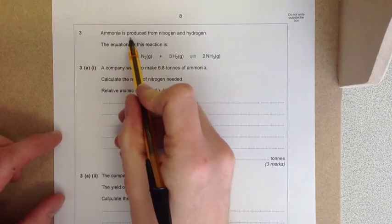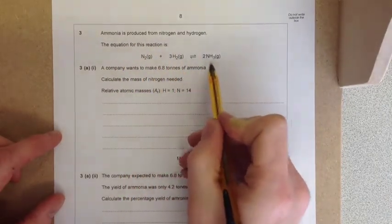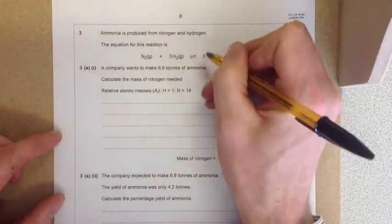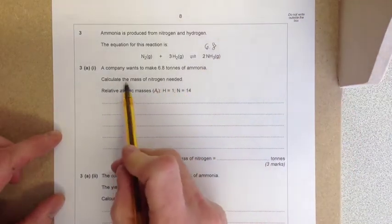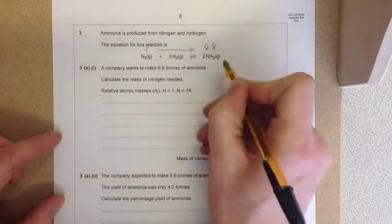In this question, ammonia is produced from nitrogen and hydrogen. A company wants to make 6.8 tons of ammonia, and you need to calculate the mass of nitrogen needed to make 6.8 tons.